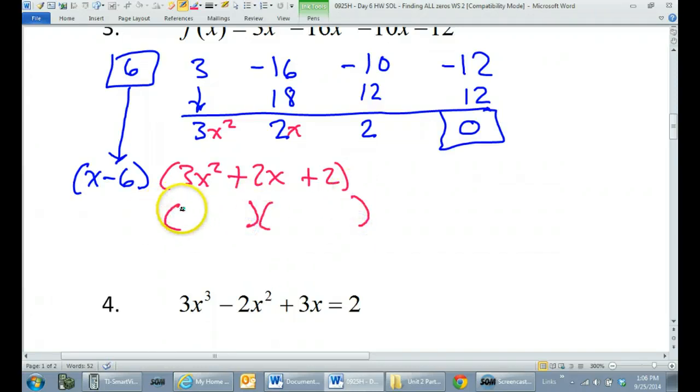I'm going to try to factor it. 3x squared will only factor as 3x and x. 2 can only factor as 2 times 1. Now, it matters whether I put 2, 1, or 1, 2. I'll try it both ways. Either way, the inner plus the outer has to give me the middle. Right now, inner, I have 2x. And outer, I have 3x. There's no way I'm going to get a 2 out of that. So, this is not working for me.